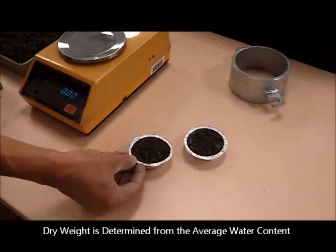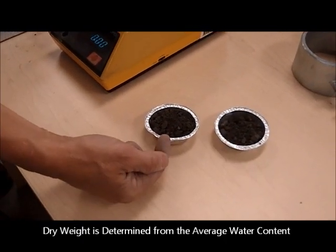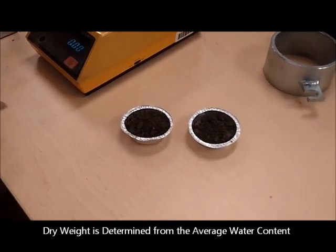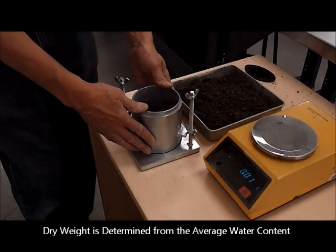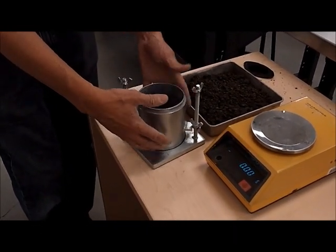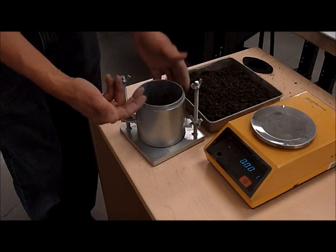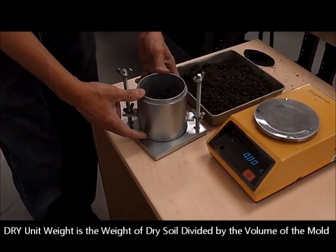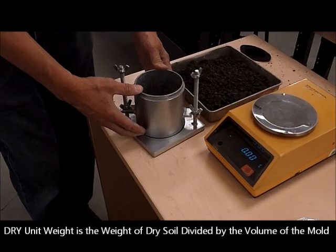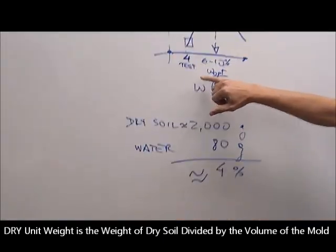We know the weight of the material because we determined that one in a wet state. But we also, overnight, we're going to get a water content. So we will be able to calculate the dry weight of the material, or the dry mass of the material. So if you take that mass divided by the volume, which is 1 over 30 of a cubic foot, you can calculate the density of the material.